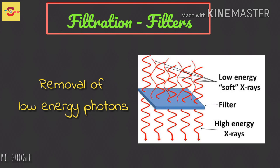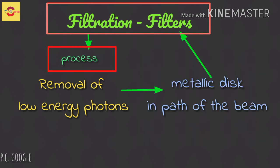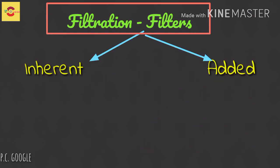The removal is accomplished by a metallic disc in the path of the beam. The object is a filter and the process is filtration. Filtration can be inherent or added.